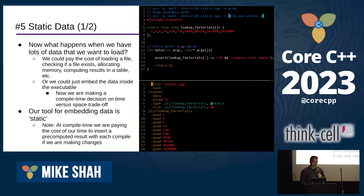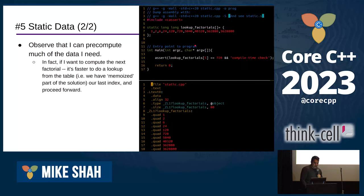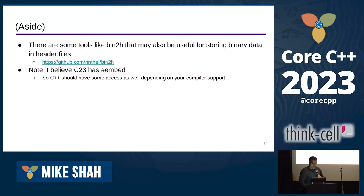C23 has `#embed` which lets you embed binary data directly, and we'll likely get some flavor of that in C++ as well, which is pretty cool for embedding large binary assets.